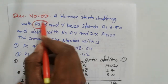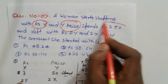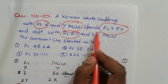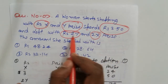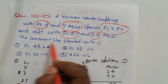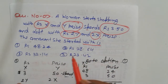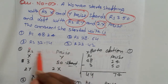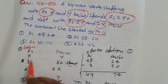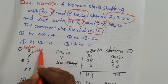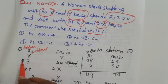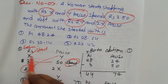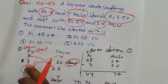Next problem: a woman started shopping with x rupees and y paise, spent 3.50, and was left with 2y rupees and 2x paise. Find the amount she started with. We write down the initial amount as x rupees and y paise.